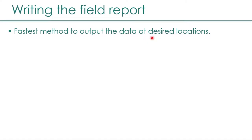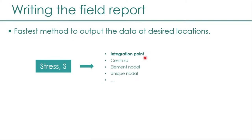One important thing about the field report method is that we can output data at a desired location. For example, stress data is by default calculated at the integration point, but using this option we can output it at different locations — such as the element centroid, element nodal, or unique nodal, which simply means at the nodes. There are many such options, and this method is very quick to use.